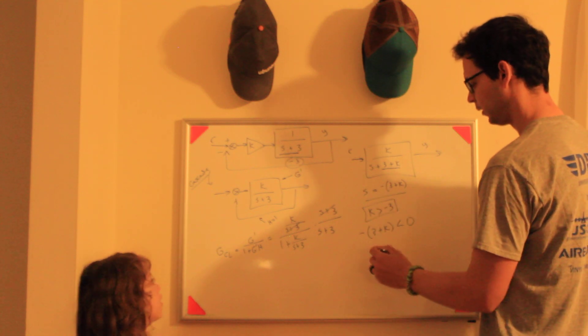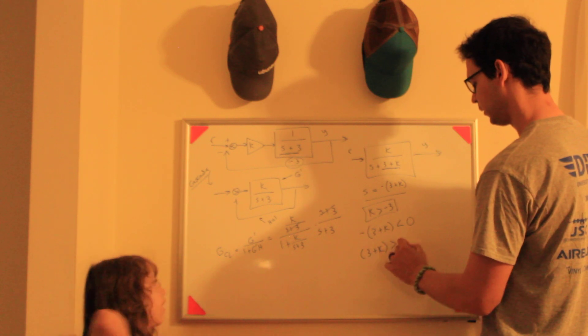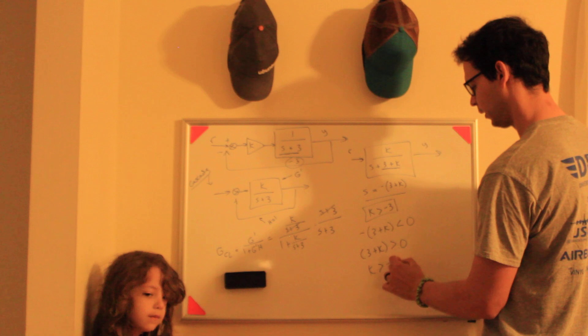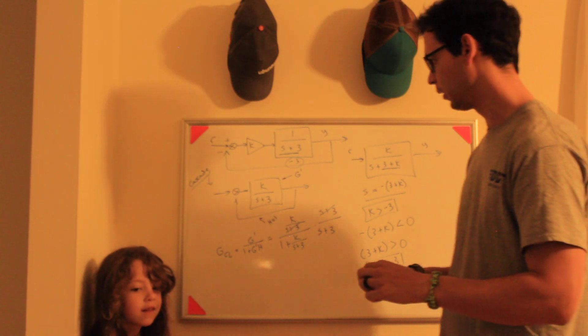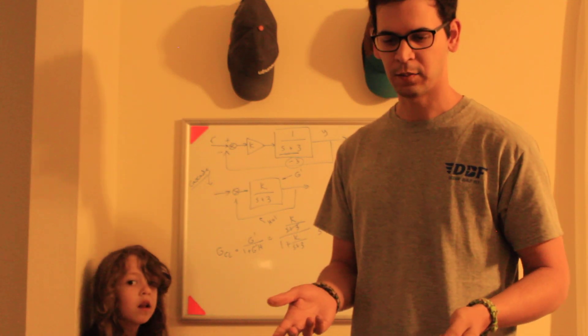If you multiply both sides by negative 1, you get 3 plus K is greater than zero. Then if you subtract 3, you need K greater than negative 3. There's a simple example for that. Let's jump on the computer and program this so we can see it in action.